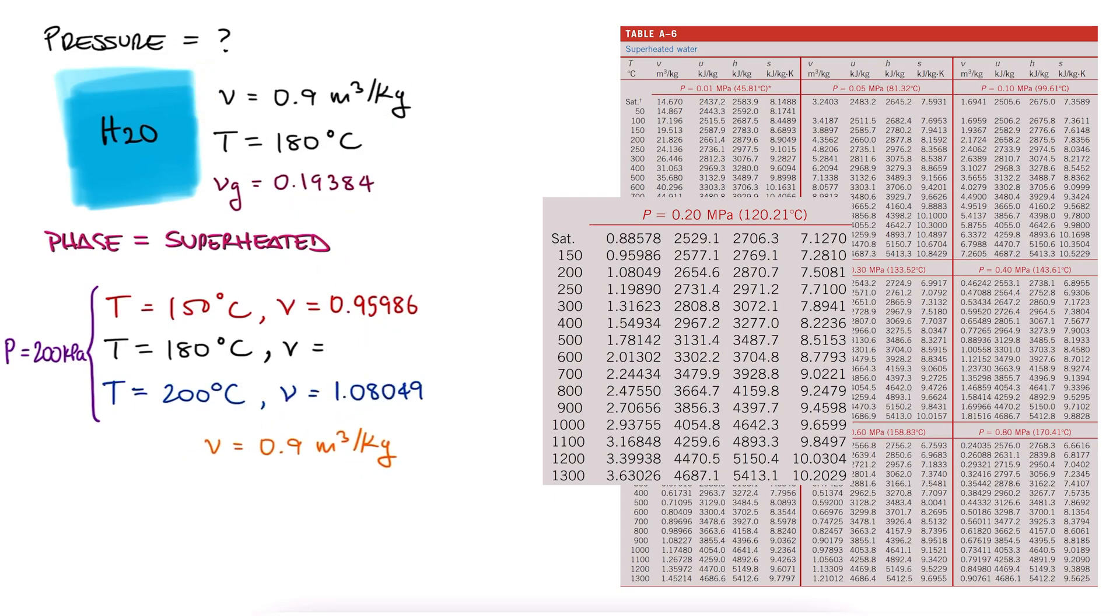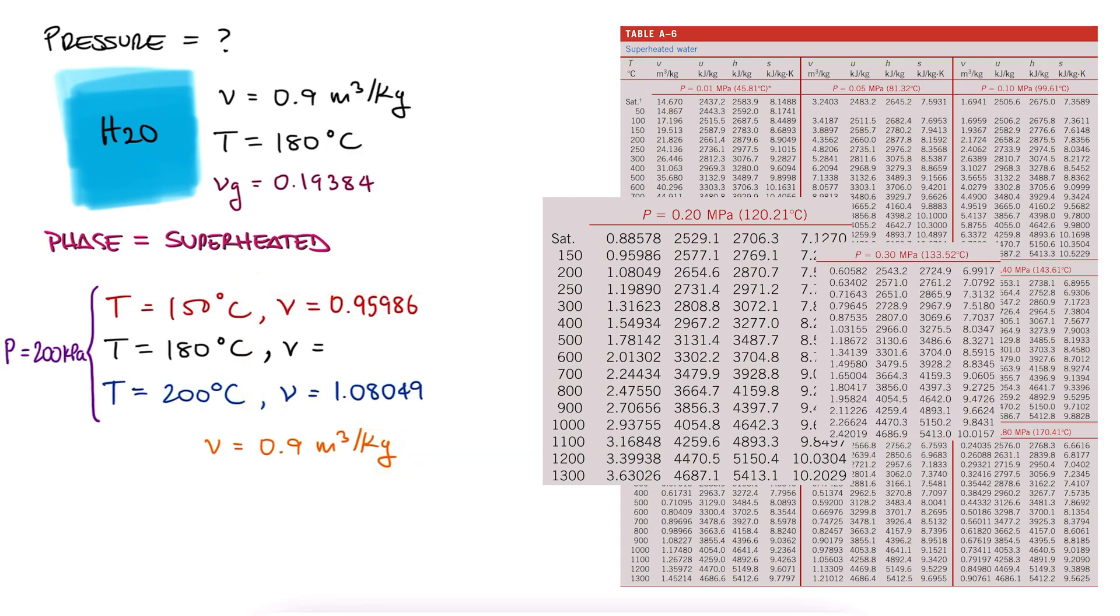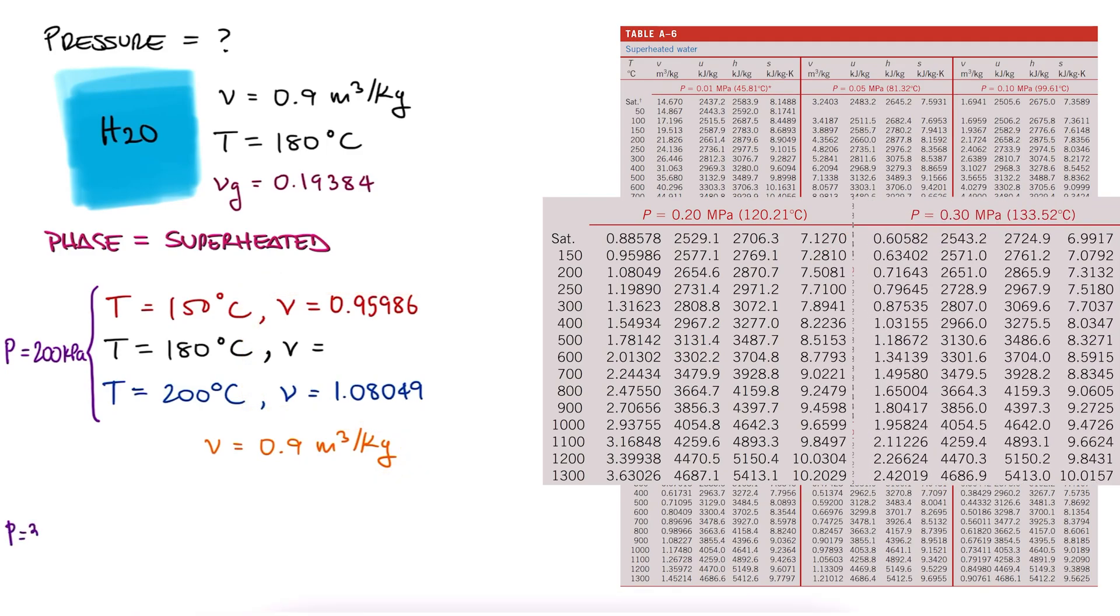We know that a higher pressure will condense our gas, meaning a lower specific volume, which is what we want to find. So we move to the next subtable, the table for 300 kilopascals, and see that for a temperature of 180, or somewhere between 150 and 200, the specific volume would be between 0.63 and 0.72.